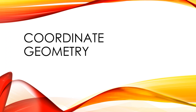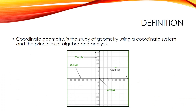Coordinate geometry, or Cartesian geometry, is the study of geometry using a coordinate system and the principles of algebra. Points are placed on the coordinate plane. The coordinate plane is a two-dimensional surface on which we can plot points, lines, and curves.